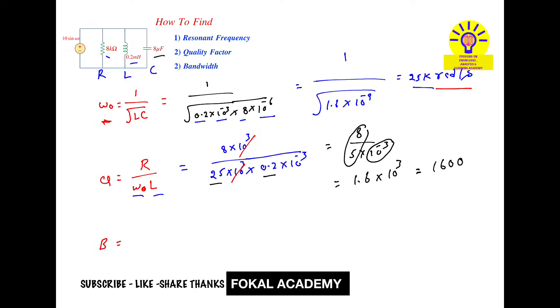Bandwidth equals the ratio of the resonant frequency to the quality factor. Now substitute the two values: 25 kilo means 10 cubed, and quality factor 1.6 into 10 cubed. Kilo will cancel. By simplifying this, we'll get the result.